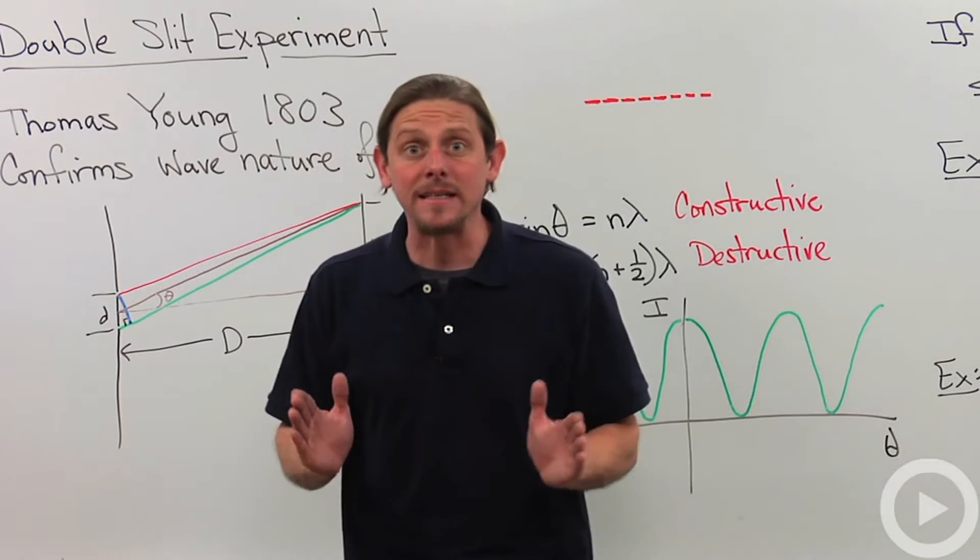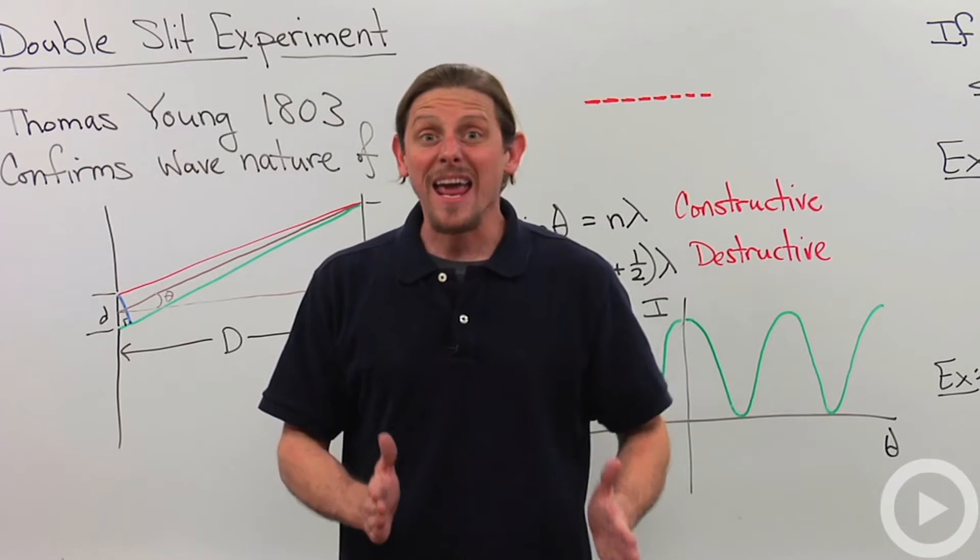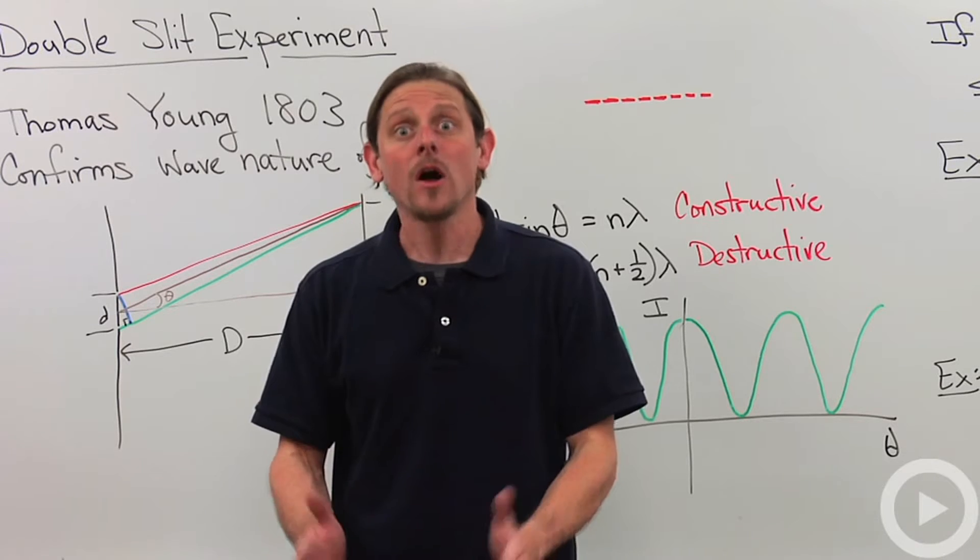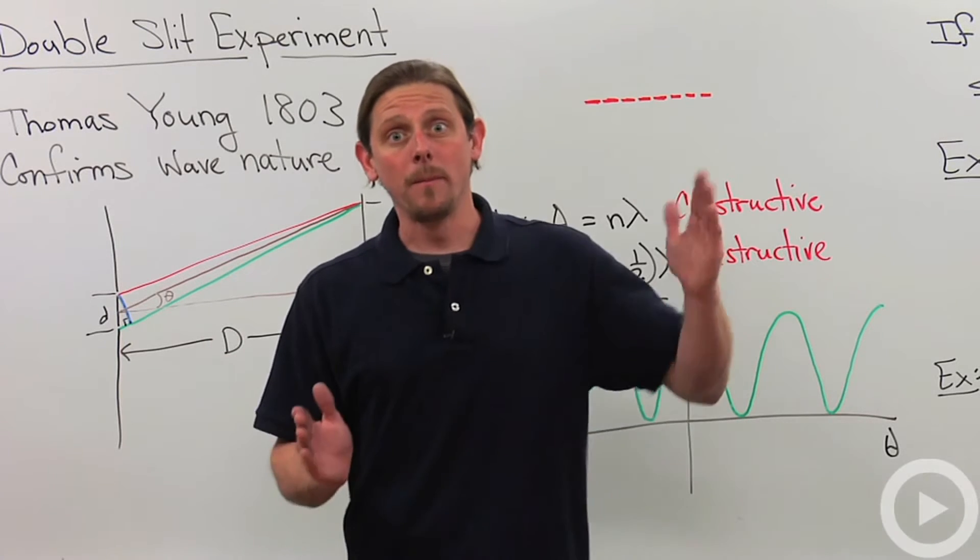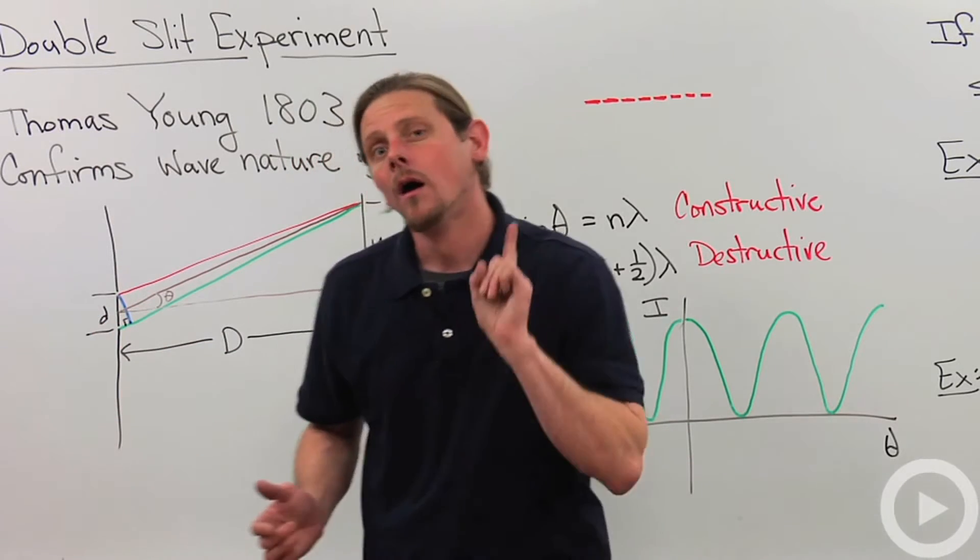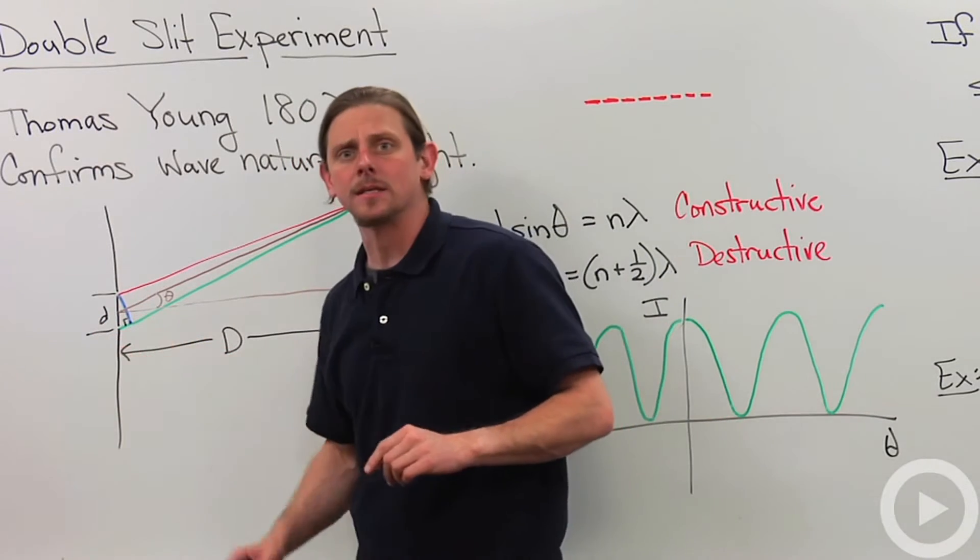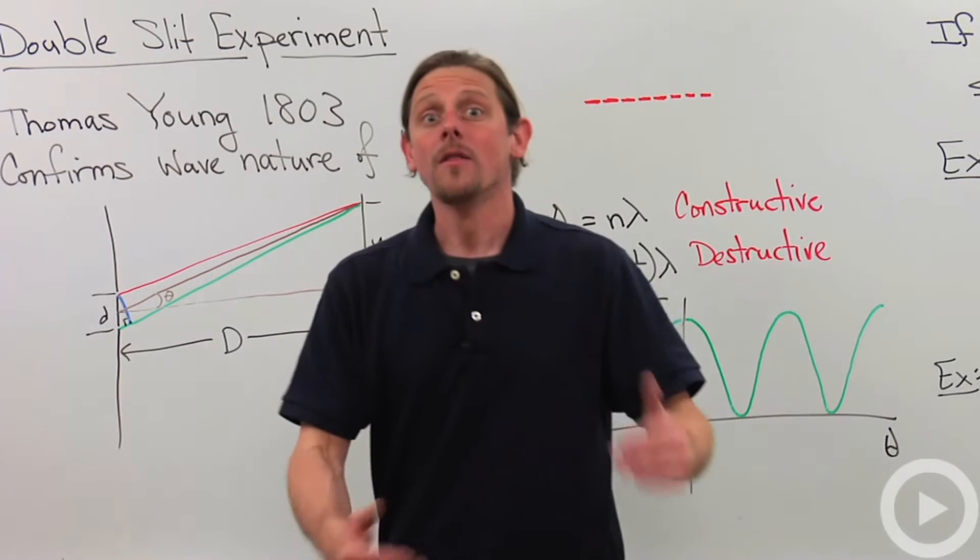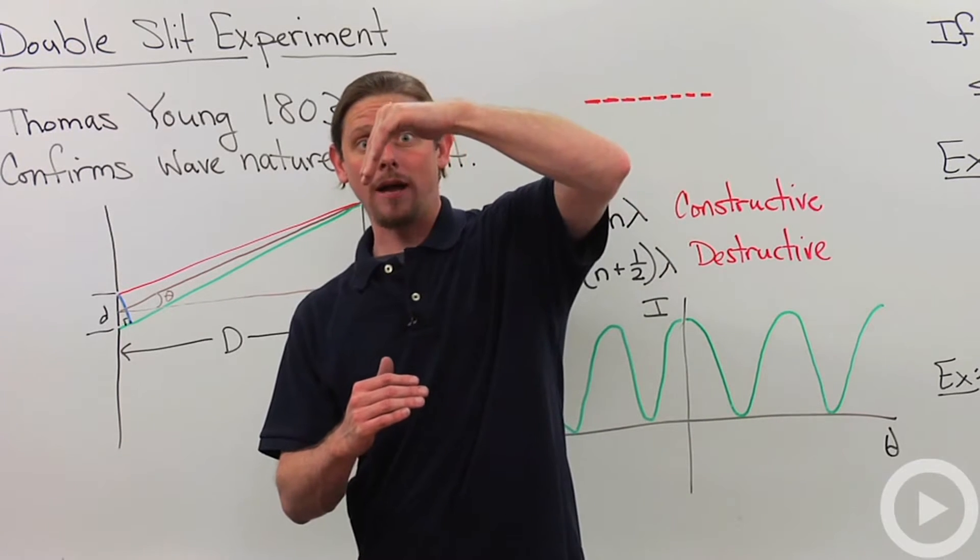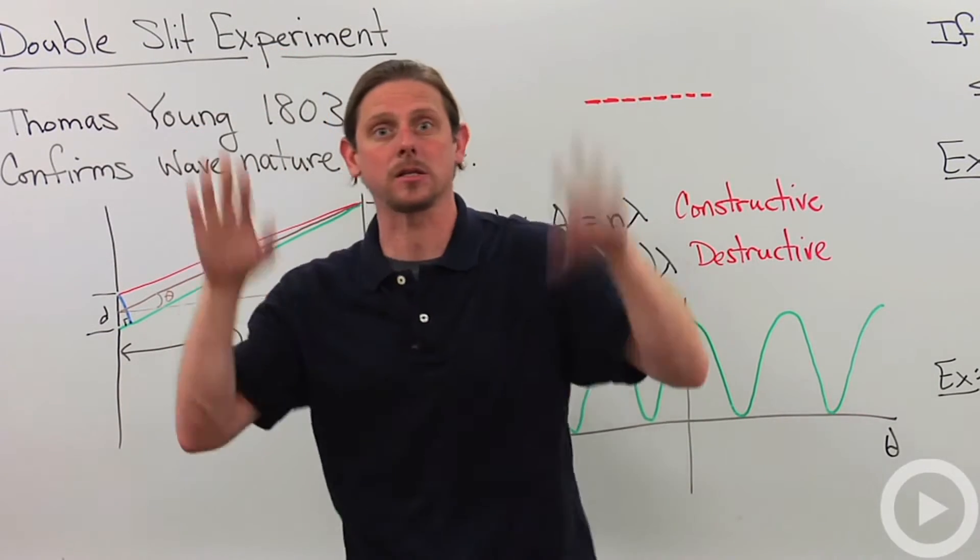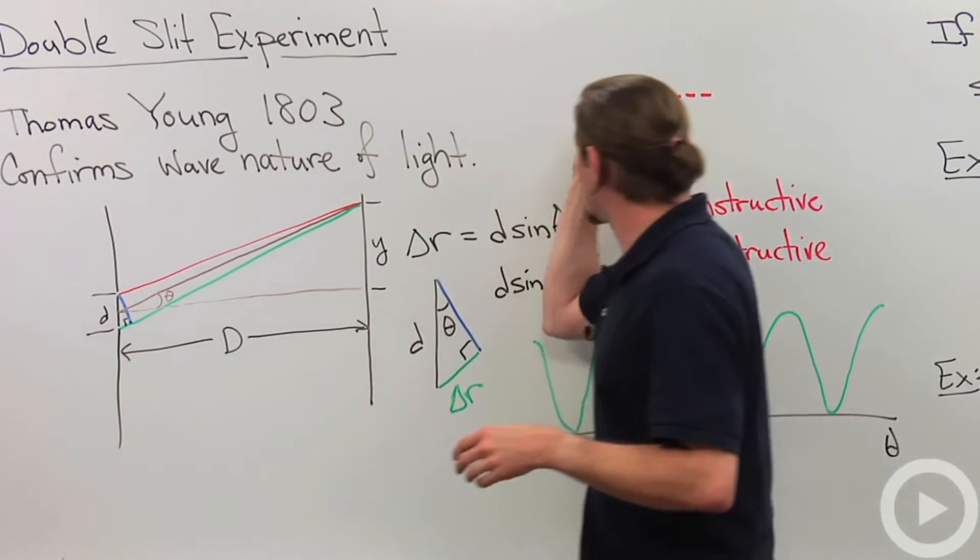If that difference in distance is exactly one wavelength, then that means that we'll have constructive interference because it'll just go an additional wavelength and then they'll both meet and they'll do the same thing. But if that additional distance is exactly one half of a wavelength, then this one will go like that and then be overlapping with the next one and they'll just cancel out exactly. And that's what gives us the dark spots.